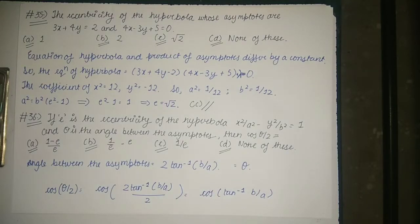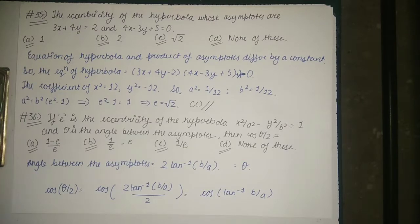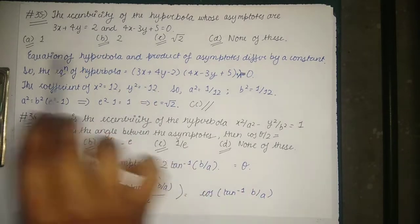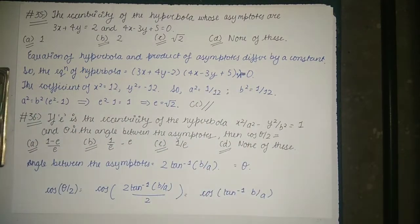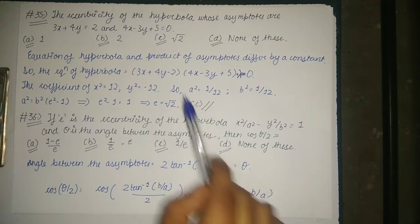We must note that for a standard hyperbola given by x²/a² - y²/b² = 1, the product of its asymptotes can be given by x²/a² - y²/b² = 0. The difference between the equation of the asymptotes product and the hyperbola is always a constant. So the equation of the hyperbola can be given by (3x + 4y - 2)(4x - 3y + 5) + λ = 0, where λ is the difference between the equations of the asymptotes product and the hyperbola.